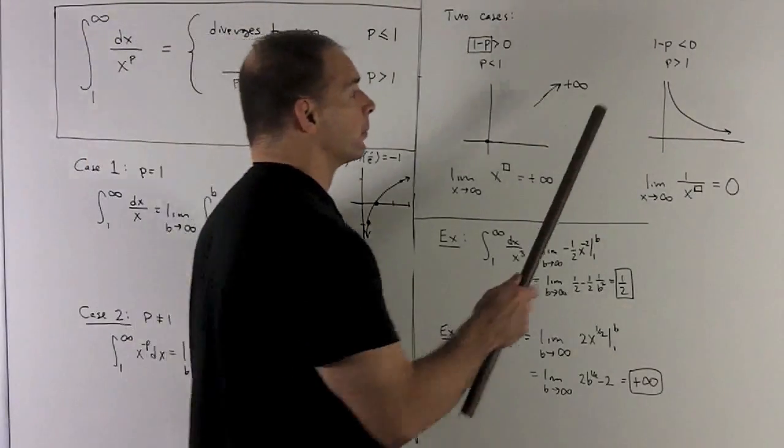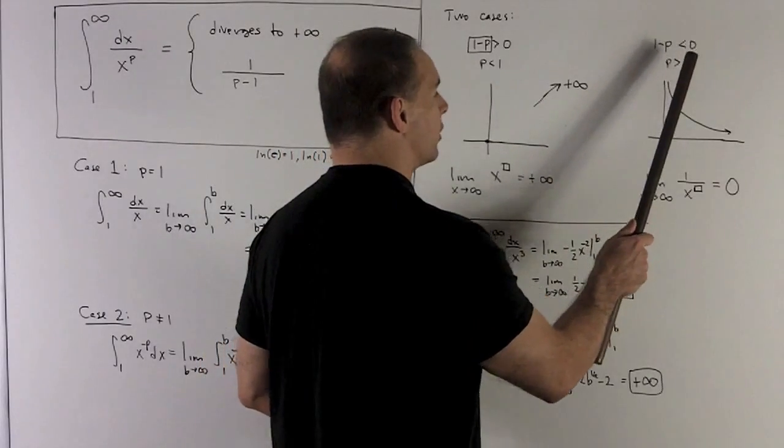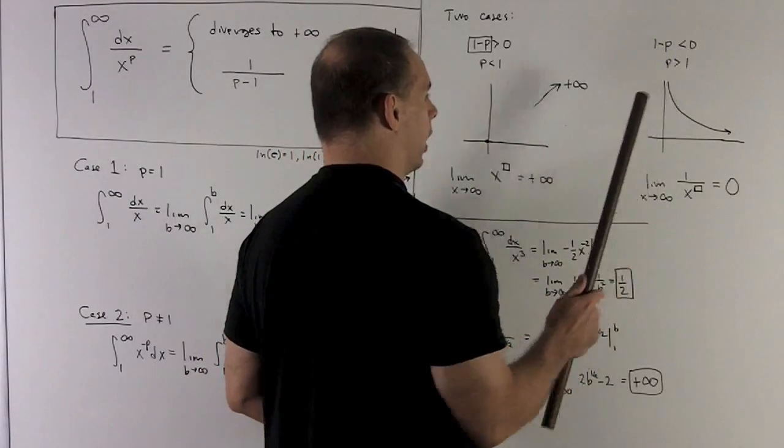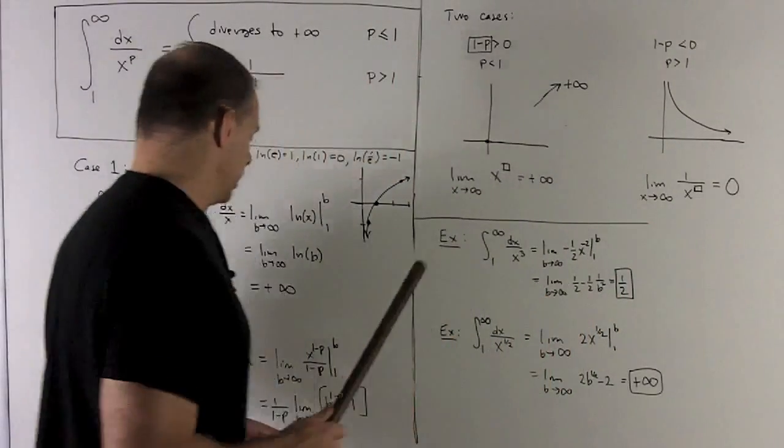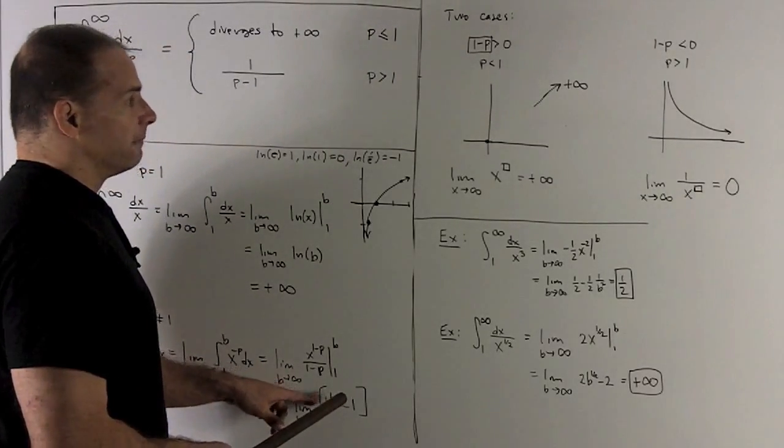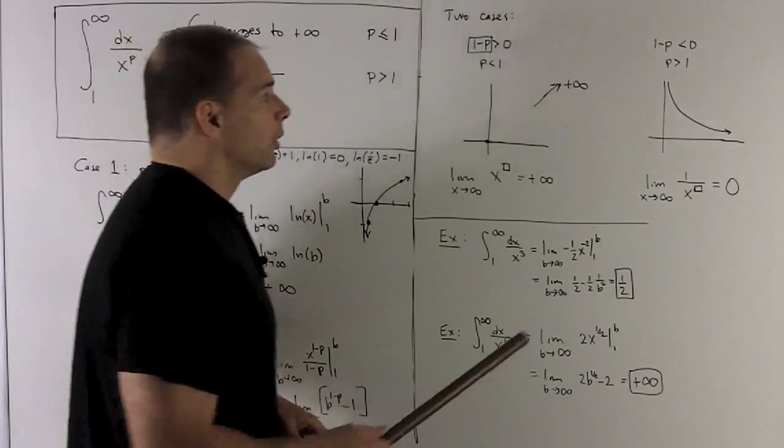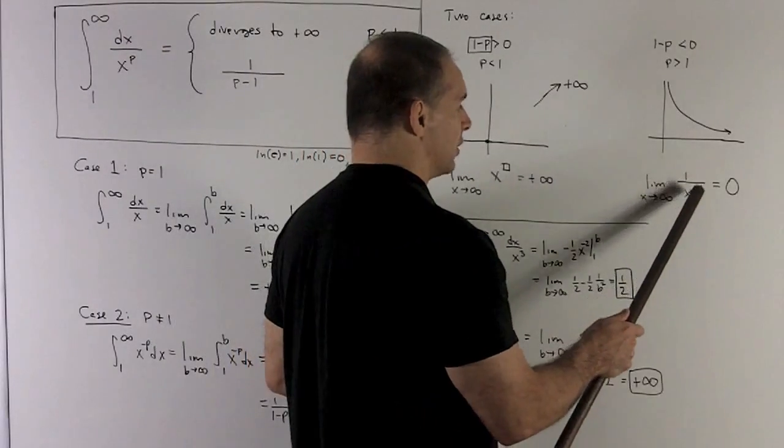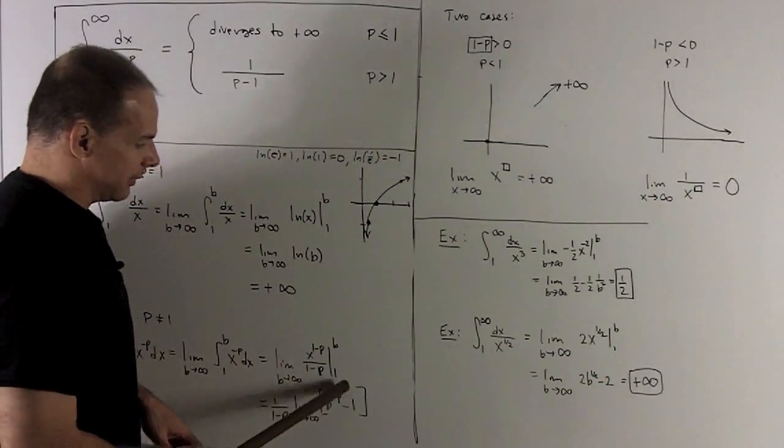In my other case, I have 1 minus p less than 0, or p is bigger than 1. Let's take a look. If 1 minus p is negative, well then, if I flip things into the bottom, we're looking at 1 over x to a positive power when we look at this thing.